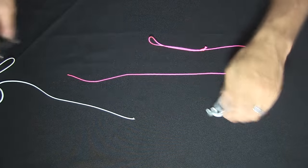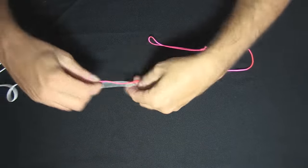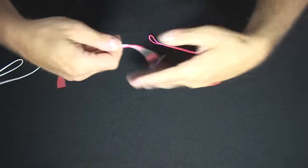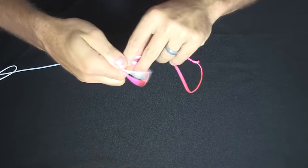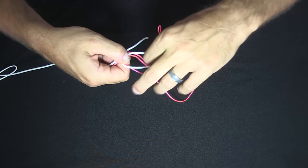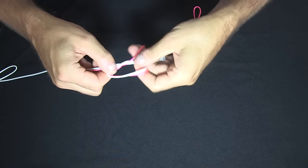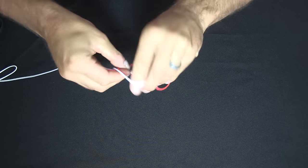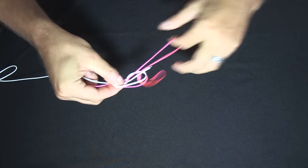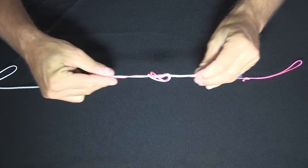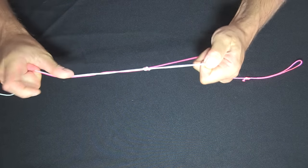What this allows us to do is to tie them together very simply, create a loop like so and what we want to do is pull that line through. We want to go through that loop twice as well. Like so. Pull down nice and tight on both ends.